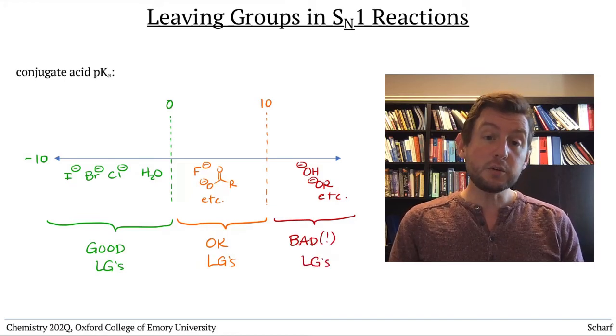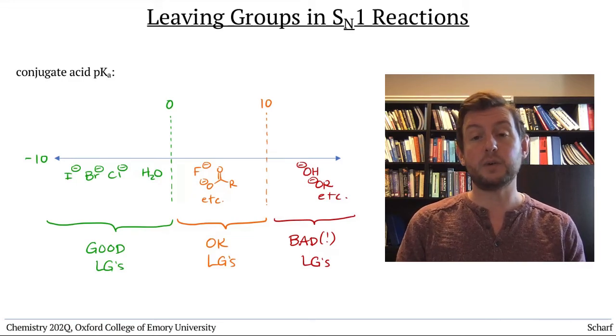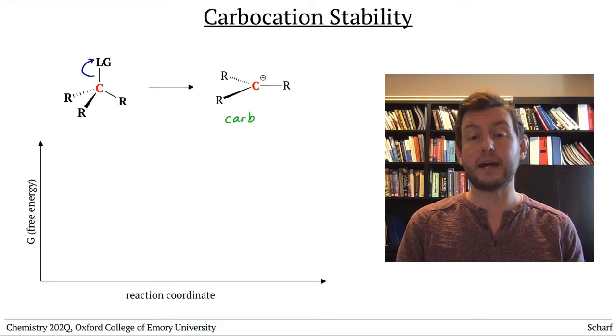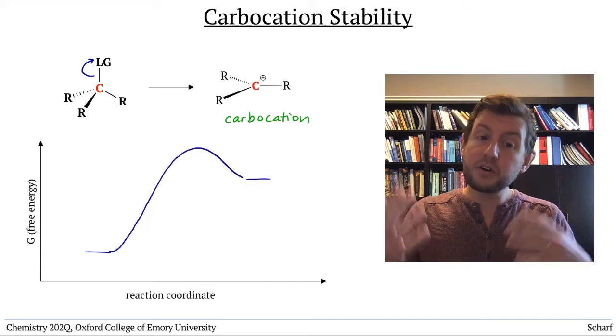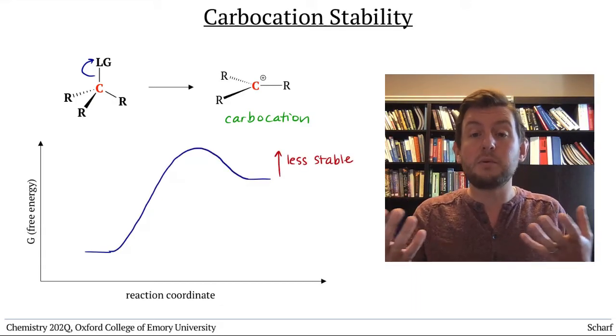The leaving group is important, but another factor is by far the most important for the SN1 reaction: the stability of the intermediate carbocation. No carbocation is very stable, but there are a few factors that make some carbocations more stable than others.